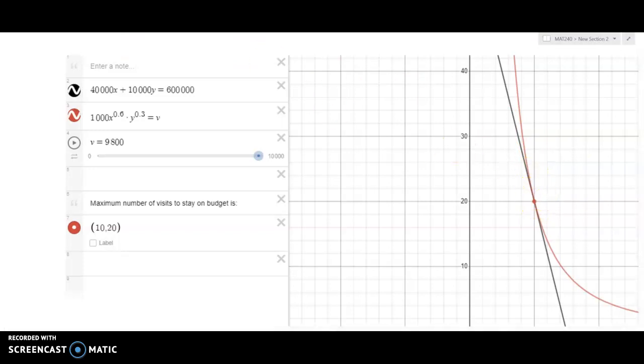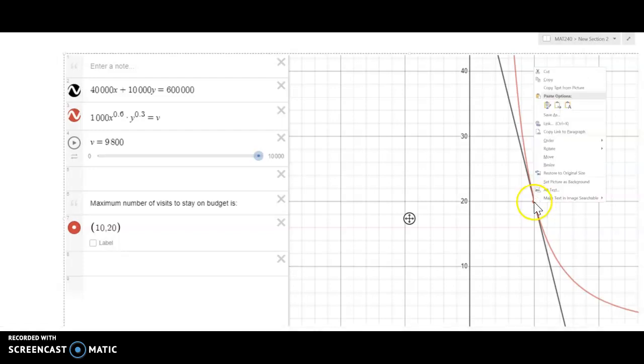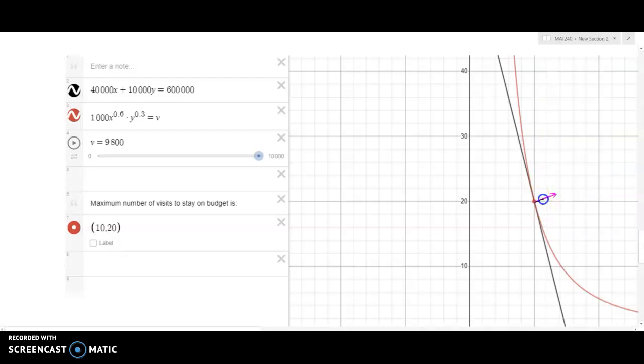Also this red curve is a contour where the number of visits, the output of our objective function, is exactly 9,800. So we observed already that the gradient vector always points perpendicular to the curve. And the one thing that we can observe at this one particular point where those two functions intersect is that they are going to have gradient vectors that point perpendicular to them. So this red curve will have a vector that points perpendicular to it.